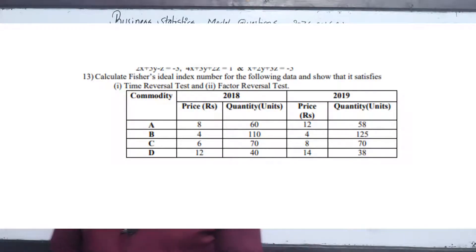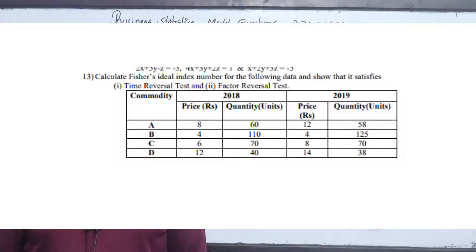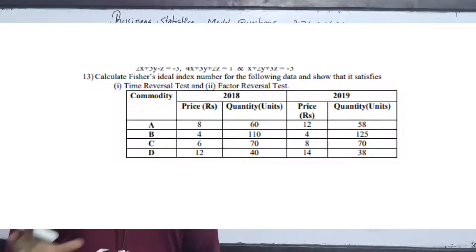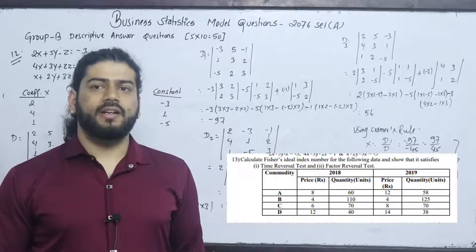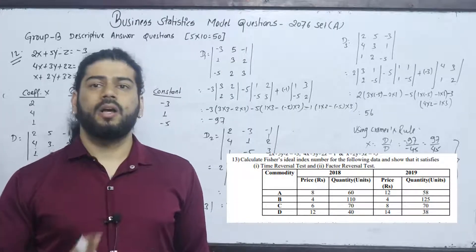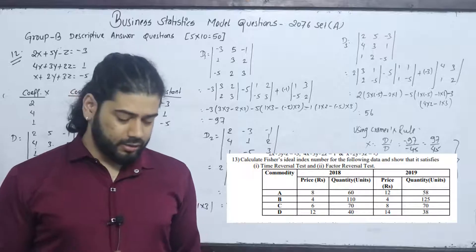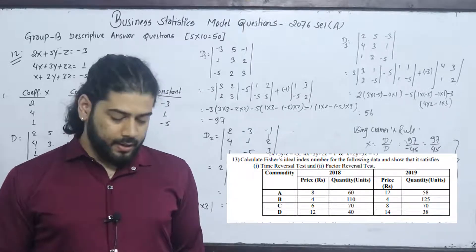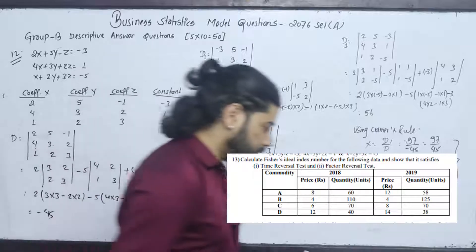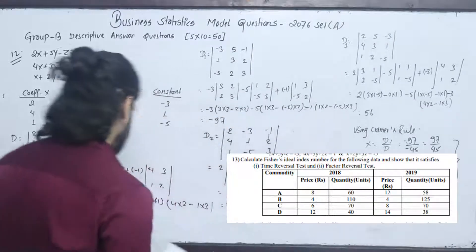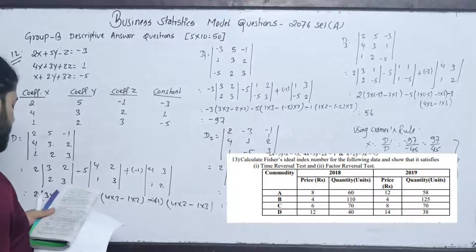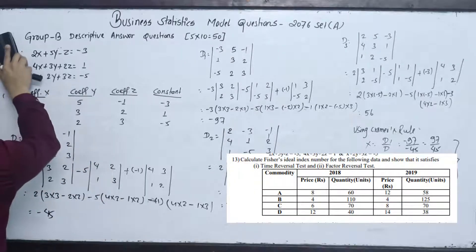Calculate Fisher's Ideal Index Number for the following data and show that it satisfies the Time Reversal Test or Factor Reversal Test. We will see separately how to satisfy the Time Reversal Test and Factor Reversal Test, how to prove ideal index. For details, a separate video link is provided in the description. Now in index number, we will solve equation number 13 — calculate Fisher Ideal Index Number for the following.